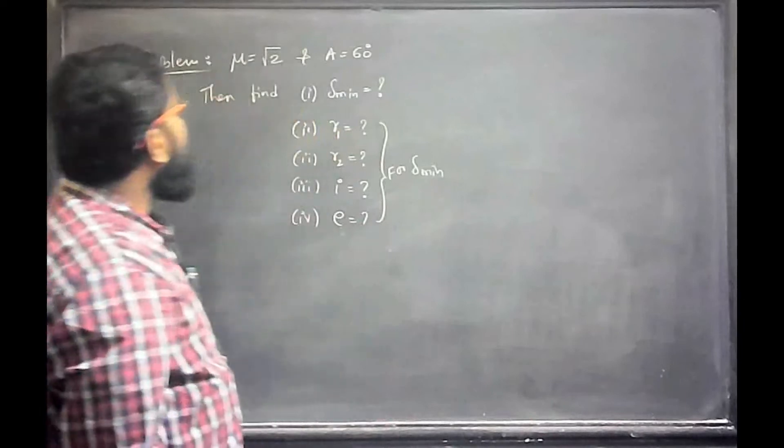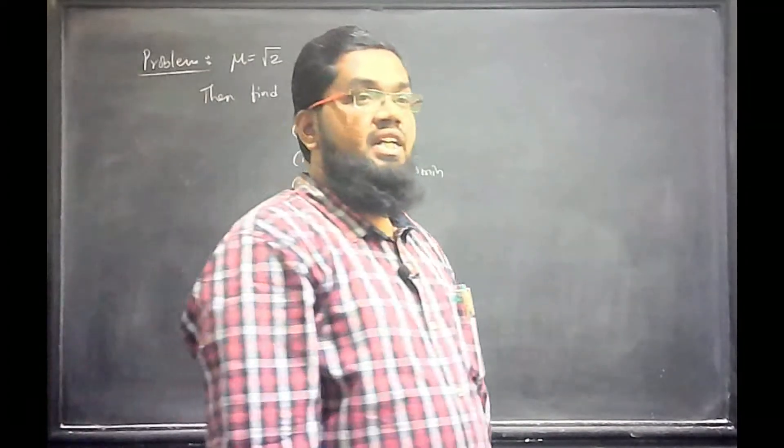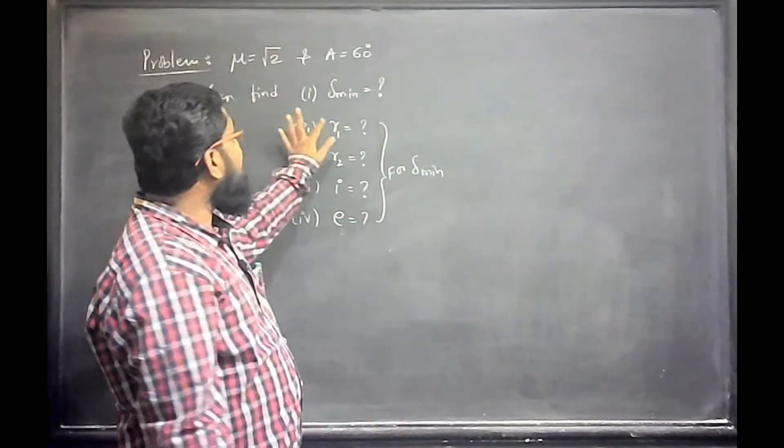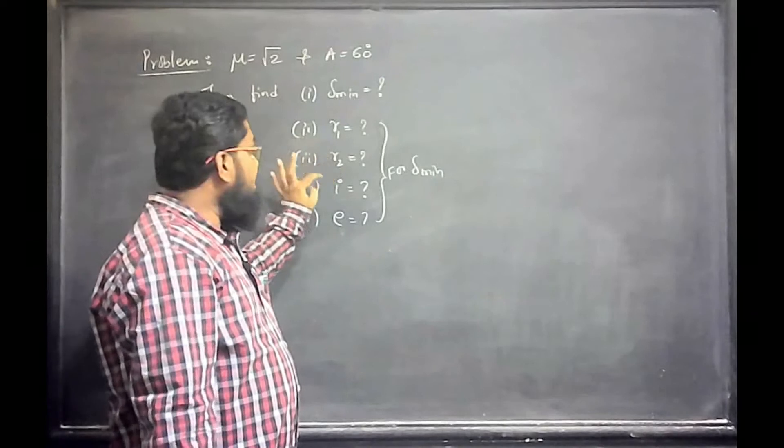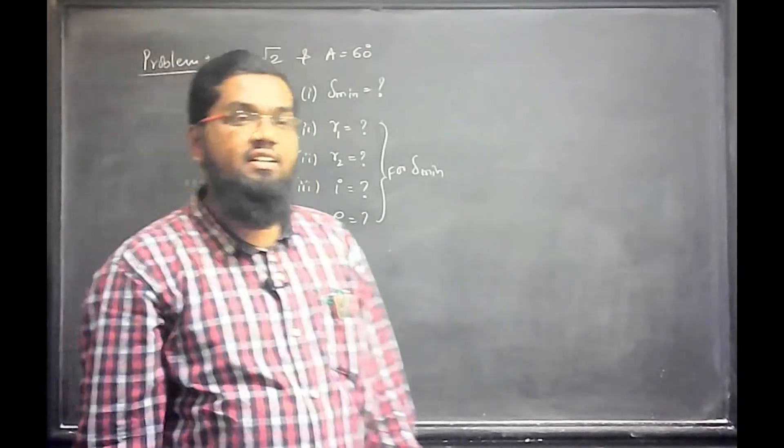Refractive index √2 and angle of the prism 60 degrees. For minimum deviation R1 equals R2. Logically R1 equal to R2. Then what is that angle I and angle E? I and E equal.